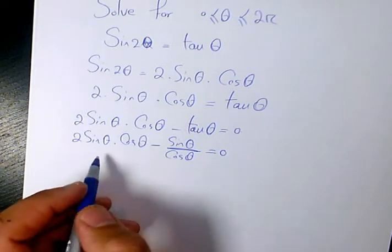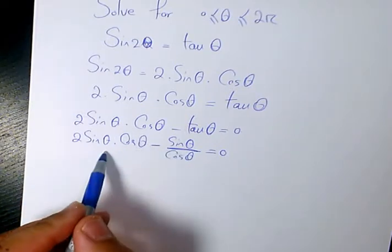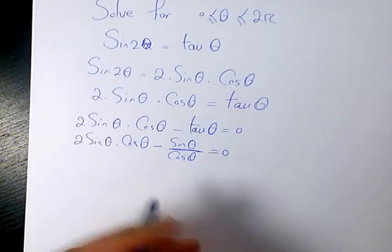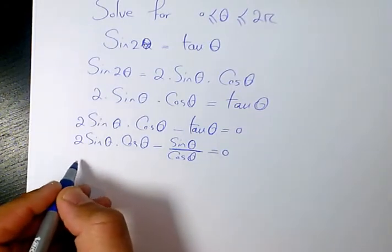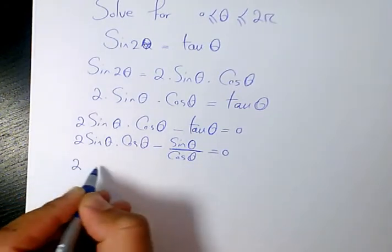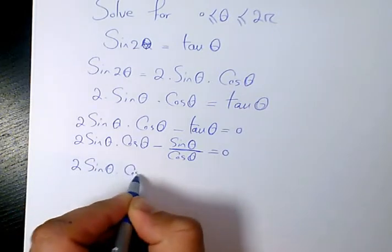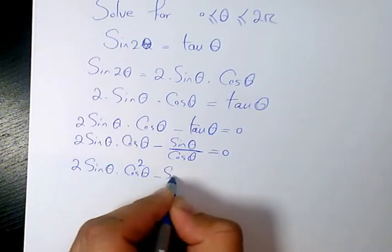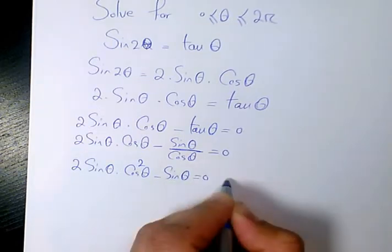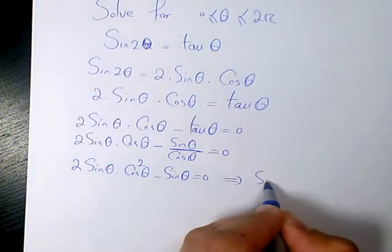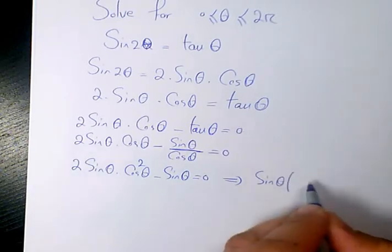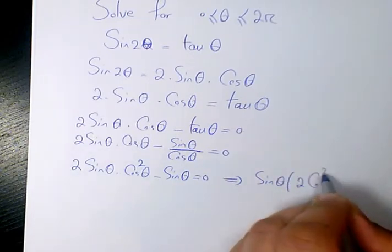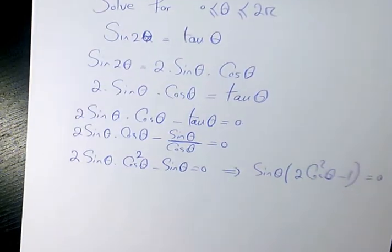Now, in order to solve this equation, it's better to multiply both sides by cos(θ). So it's going to be 2sin(θ)cos(θ)cos(θ), so it's going to be cos²(θ) - sin(θ) = 0. And then when you factor it, it's going to be sin(θ)(2cos²(θ) - 1) = 0.